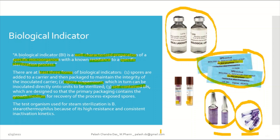The result will be indicated by a color change. Different colors are specified by different vendors, signifying whether you found growth or no growth — indicating how many spores are alive or whether all spores were completely killed. The test organism used for steam sterilization is Geobacillus stearothermophilus because of its higher resistance and consistent inactivation kinetics, making it the most popular choice. However, you can use different biological indicators based on your process, risk assessment, and validation strategy.